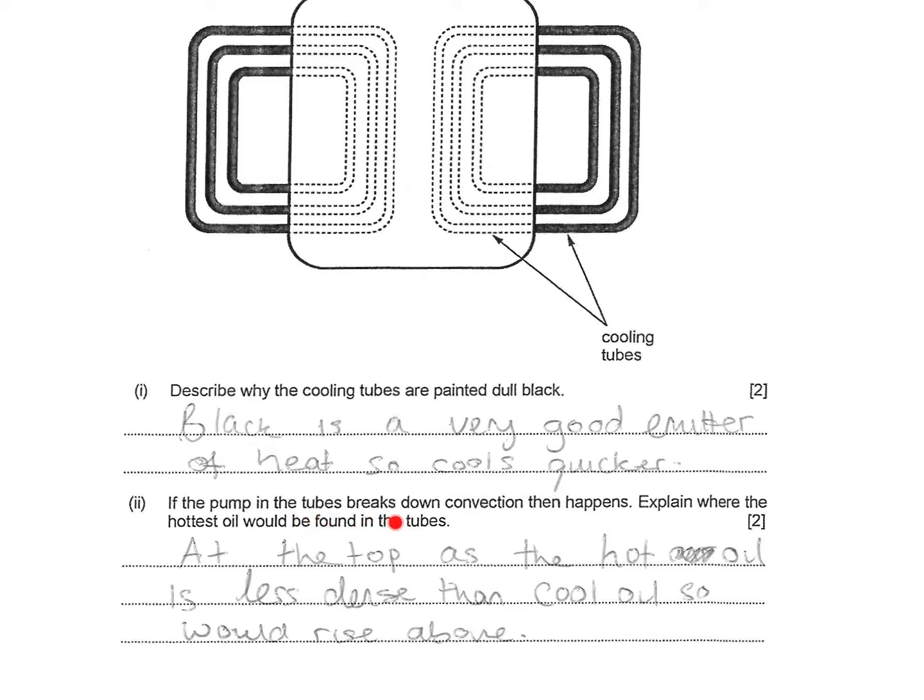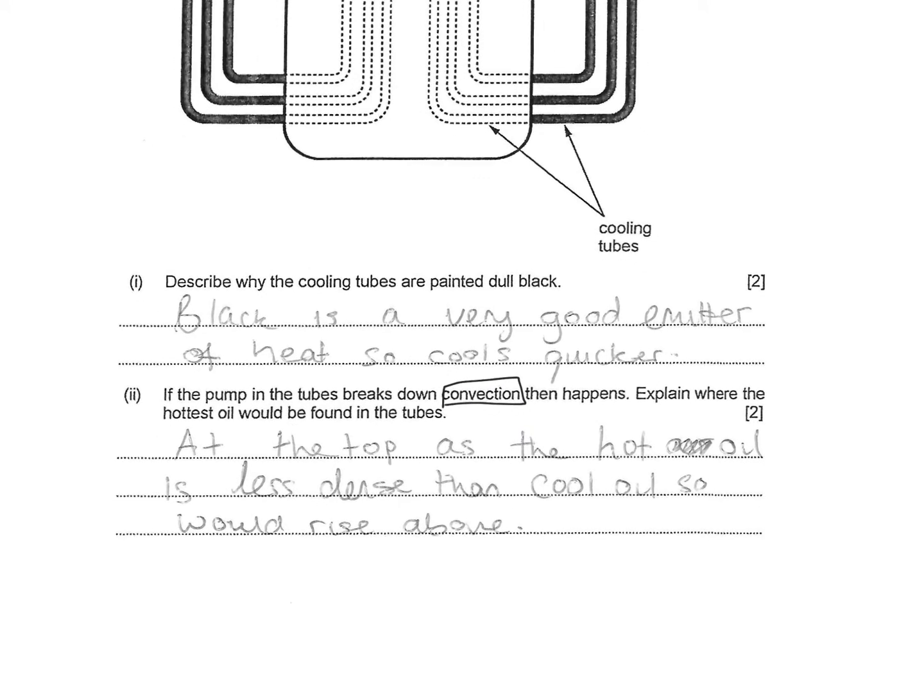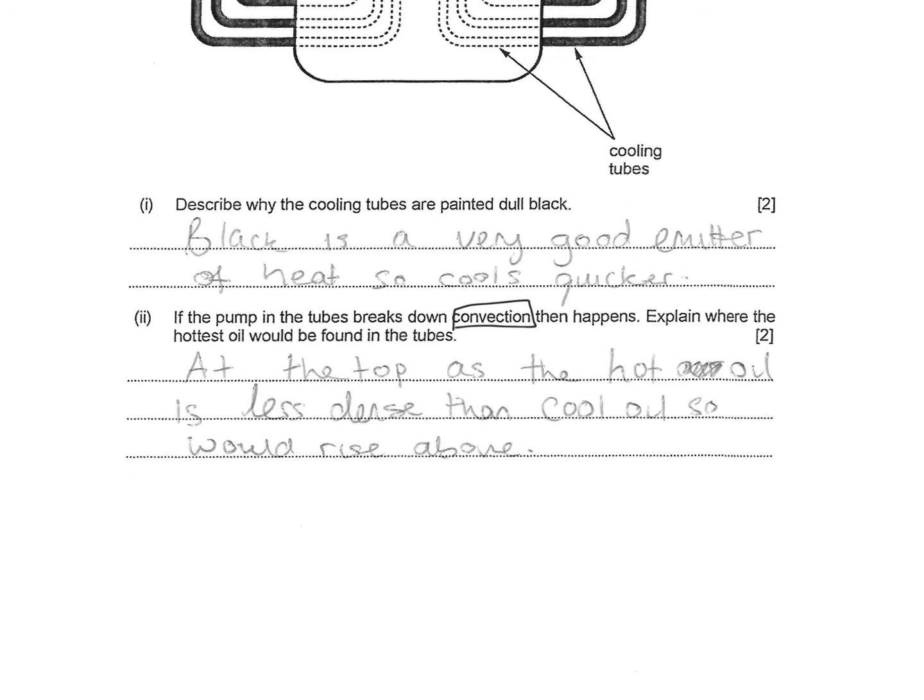If the pumps in the tubes break down, convection then happens. Explain where the hottest oil will be found. All we're looking for here is that buzzword convection. They will be found at the top because when we learn about convection, hot things rise because they're less dense, and cool things are more dense so they fall. You'd find the hot oil at the top because it's less dense than the cool oil, so it would rise above. Look at the buzzwords - you didn't really need to know anything else except that something really hot would be at the top.